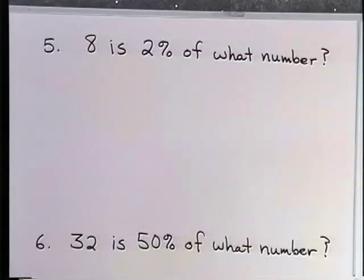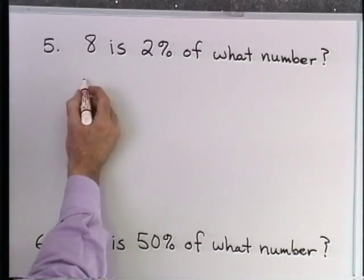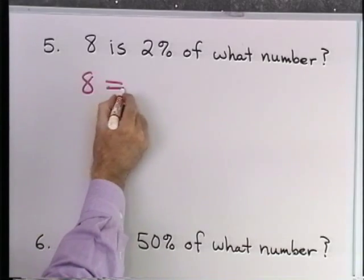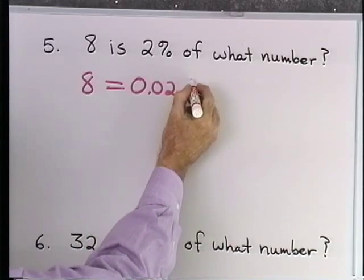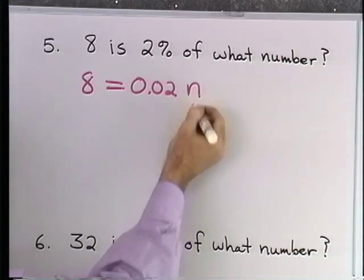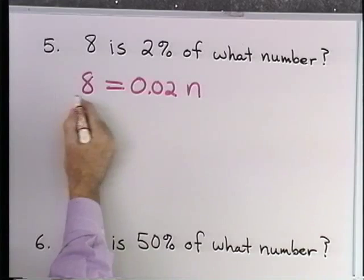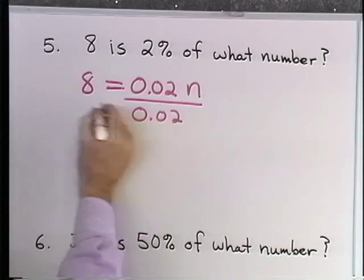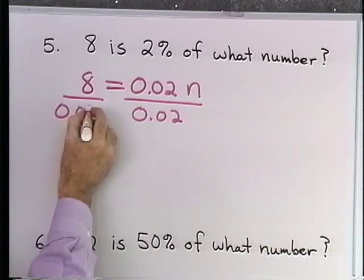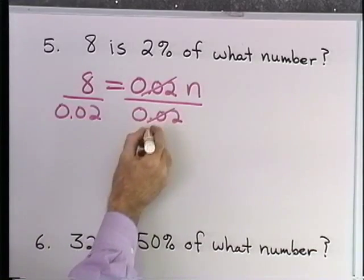Let's try a couple more of these. Problem 5, we have 8 is 2 percent of what number? I'm going to translate: 8 is, 2 percent is 0.02, of means multiply what number is n. So I just multiply times n. Now to solve this problem, I'm going to divide both sides by 0.02. Those will divide out.